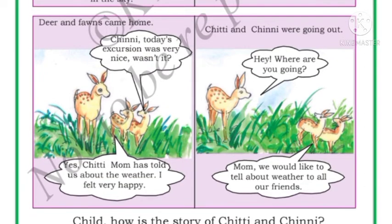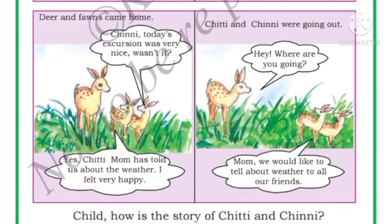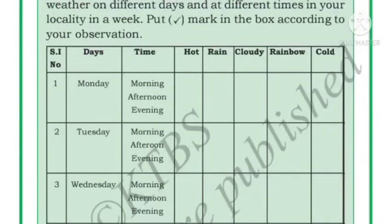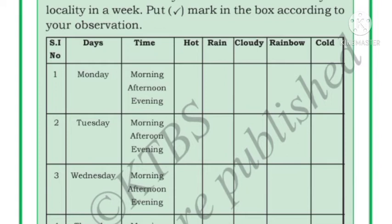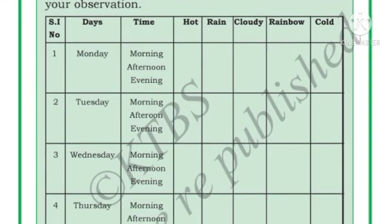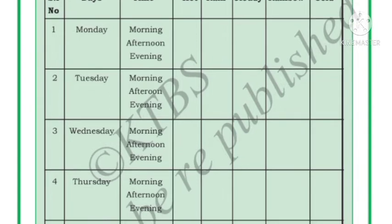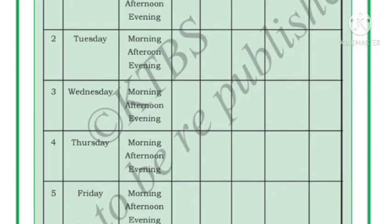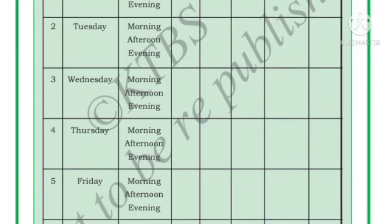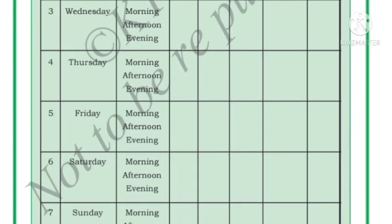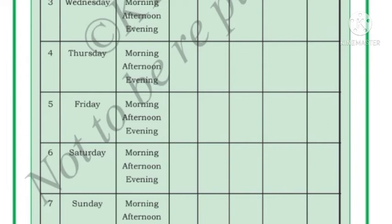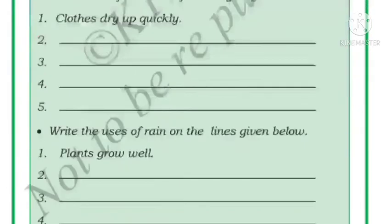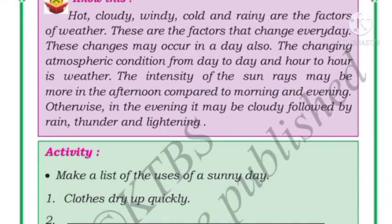Children, how was the story of Chitti and Chinni? We got to know more things about weather and rainbow. Now for the activity: observe the changes which take place in the weather on different days and at different times in your locality over a week, and put a tick mark in the box accordingly. The columns include days — Monday through Sunday — and times: morning, afternoon, and evening, with weather types: hot, rain, cloudy, rainbow, and cold.